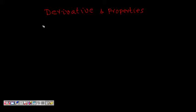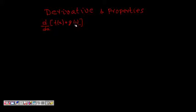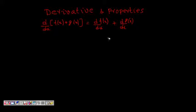The first property we learn is the sum rule: d/dx of f(x) plus g(x). These are two functions and we want to find the derivative of their sum. This is equal to d/dx of f(x) plus d/dx of g(x). You can take the sum of two expressions and their derivatives will also be the sum.